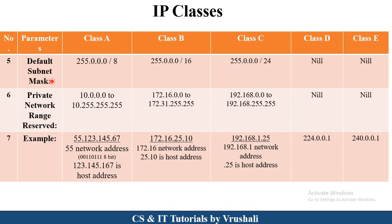The next point is subnet mask. All networks are divided into sub-networks. The subnet ID for Class A is 255.0.0.0, divided by 8, meaning the first 8 bits. When you convert this number into binary format, the first 8 bits indicate the network address and the last 3 digits indicate the host address. Similarly, in Class B, the first 2 numbers indicate the network address and the last 2 numbers indicate the host address. This is called the default subnet mask.